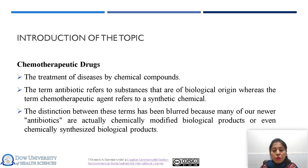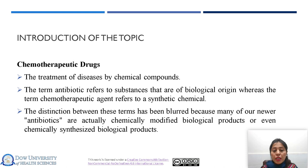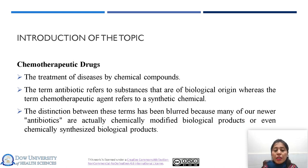Coming towards the introduction of the topic, what are chemotherapeutic drugs? Basically, the treatment of disease by any chemical compounds. The term antibiotics refers to substances that are of biological origin, whereas the term chemotherapeutic agent refers to some synthetic chemicals. The distinction between these terms has been blurred because most antibiotics are now chemically modified or even chemically synthesized biological products. Most infectious diseases once considered incurable are now curable by the treatment of these agents.